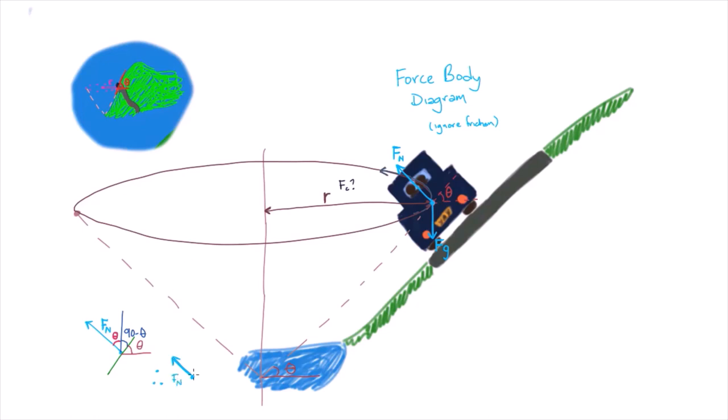This means that the vertical component of the normal force is equal to the normal force multiplied by cos theta, and the horizontal component that points radially inwards is equal to the normal force times sine theta.